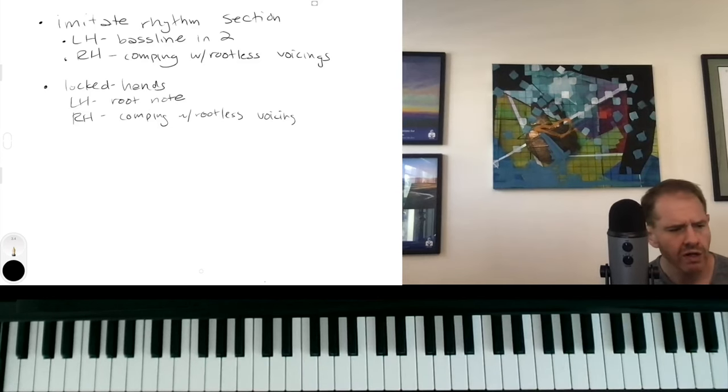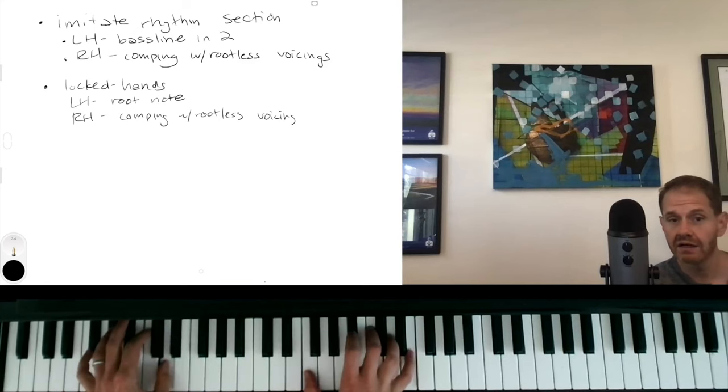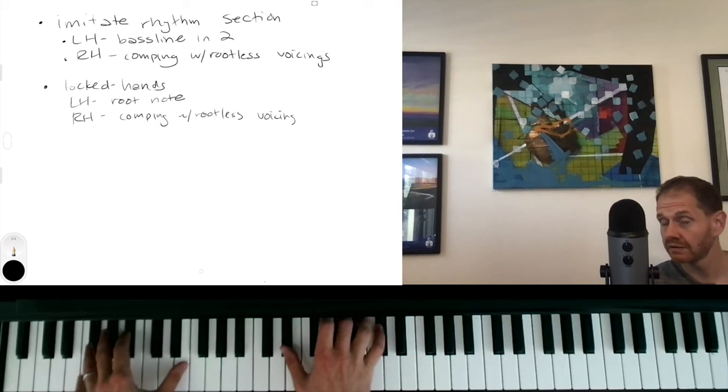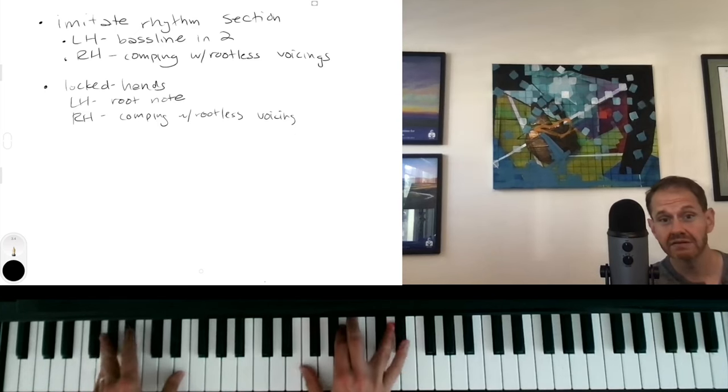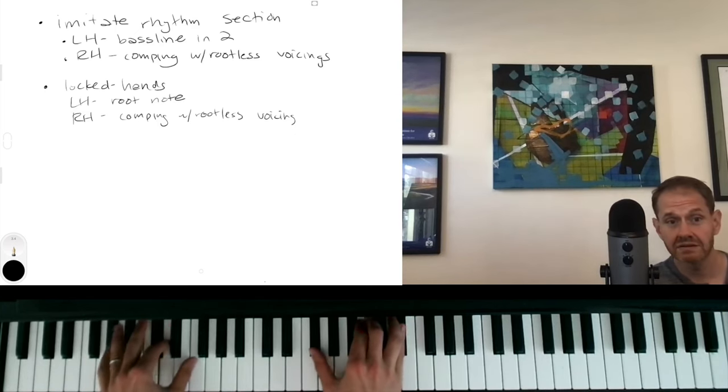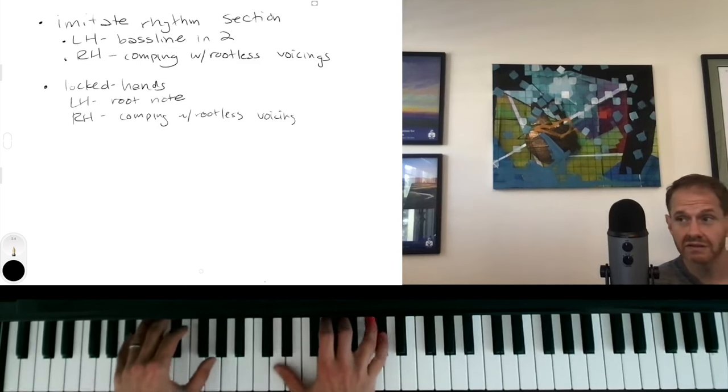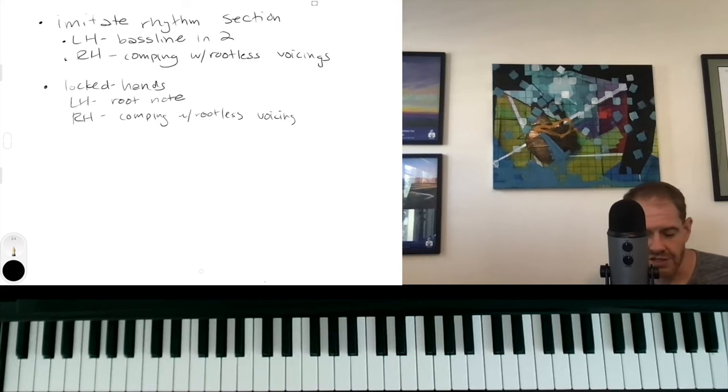One special thing to do with this kind of texture, with just the root in the left hand and the rootless voicings in the right hand, is what I think of as a march. And when you're doing that you're just going to play every quarter note. I especially like using this for like the bridge or the contrasting section of a tune because it helps really set it apart and define it as contrasting.